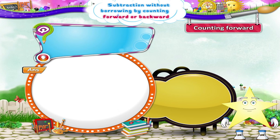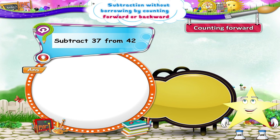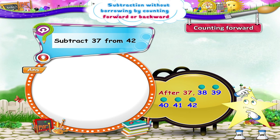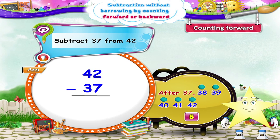Here's the next example, Starry. Subtract 37 from 42. What is the first step Starry? Yes. Let's count forward after 37 till we reach 42: 38, 39, 40, 41, 42. How many numbers did we count Starry? Only 5. So, 42 minus 37 equals 5.